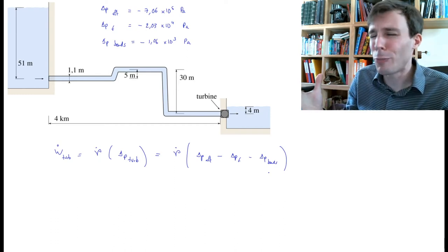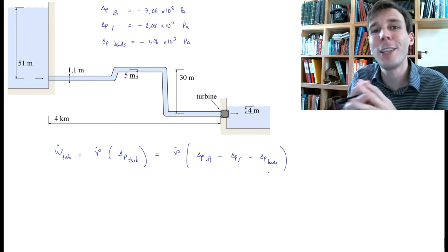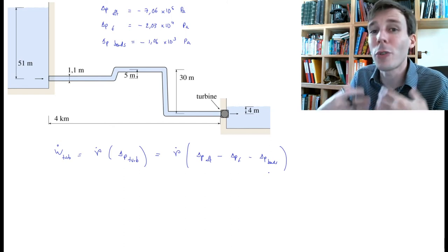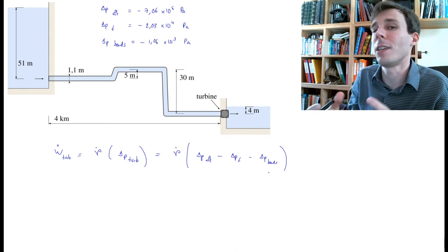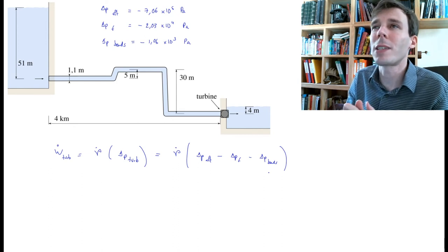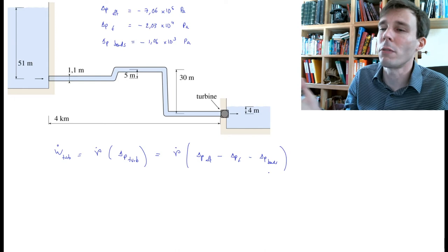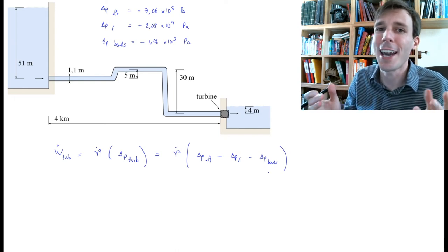Every delta P due to friction that we calculate will be a negative number. The problem is, because of historical reasons—because hydraulics has been the very first area of flow mechanics to deliver any useful results—the tradition in this field is to express those delta P's as positive numbers.